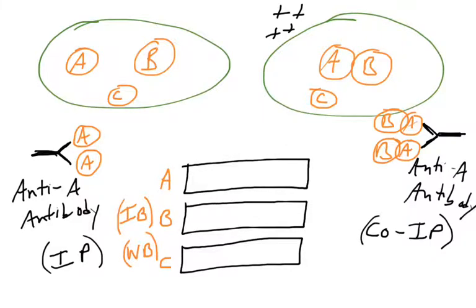Let's look at a Western blot and how a researcher might publish this in a paper. We're doing a Western blot for proteins A, B, and C. Western blots detect levels of protein — sometimes referred to as immunoblots because they use antibodies. If you see IB or WB, they refer to immunoblots or Western blots. Typically, researchers will first look at total levels of protein to prove those proteins are there. If you did a Western blot for protein A, B, and C on either cell, you'd find all the proteins are present.